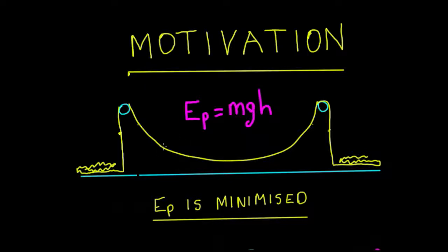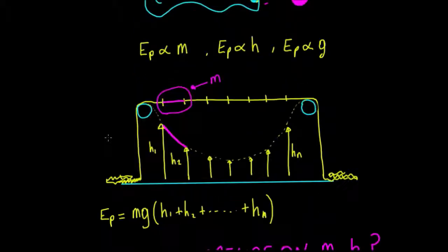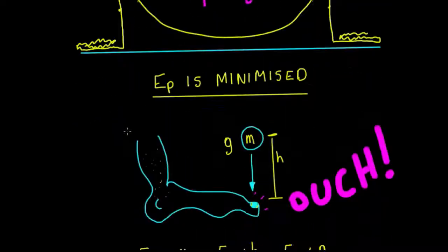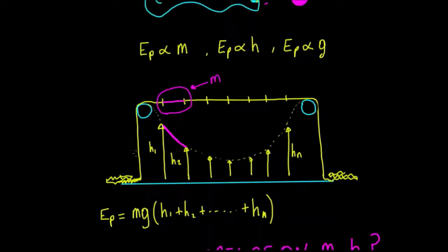Now let's imagine the rope is sitting in its equilibrium position — the position it naturally tends to take. The equilibrium position is the position that minimizes the gravitational potential energy. So there is a particular curve that the rope will sit in, and that curve will minimize the gravitational potential energy.